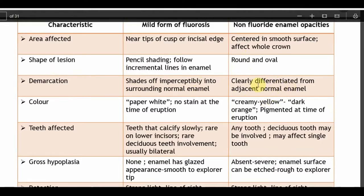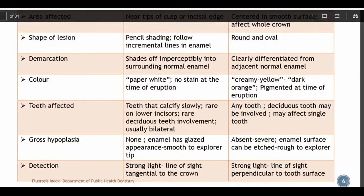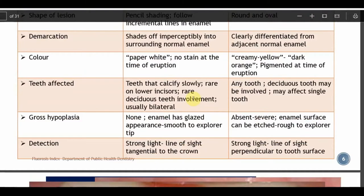In fluorosis, the demarcation shades imperceptibly into surrounding normal enamel, but in non-fluoride opacities there is a clear demarcation. Color in fluorosis will be paper white; non-fluoride opacities will be creamy yellow to dark orange. Teeth affected by fluorosis calcify slowly — molars and premolars are commonly affected, rare on lower incisors, and very rare on deciduous teeth. Non-fluoride opacities can happen on any tooth, including deciduous teeth. Gross hypoplasia will not be present in fluorosis; enamel has a glazed appearance.